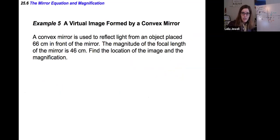Let's check out an example, a virtual image formed by a convex mirror. A convex mirror reflects light from an object placed 66 centimeters in front. The magnitude of the focal length is 46 centimeters. Find the location of the image and the magnification.